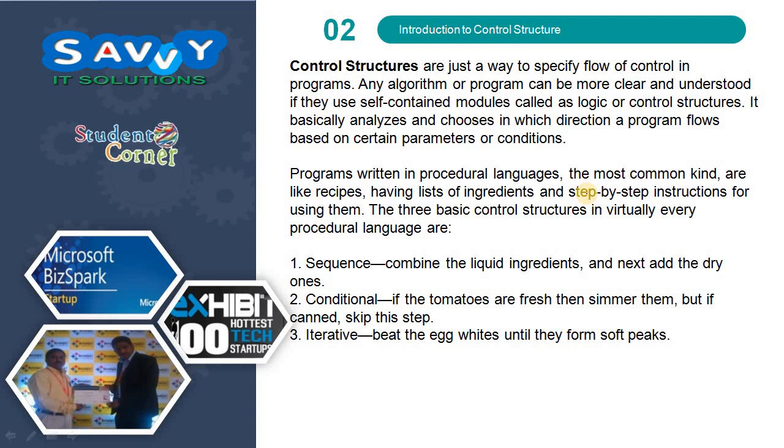Programs written in procedural languages, the most common kind, are like recipes having lists of ingredients and step-by-step instructions for using them. The three basic control structures in virtually every procedural language are: Sequential - combine the liquid ingredients and next add the dry ones. Conditional - if the tomatoes are fresh then simmer them, but if canned, skip this step. Iterative - beat the egg whites until they form soft peaks.